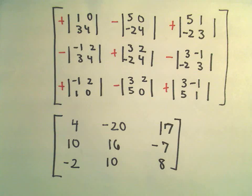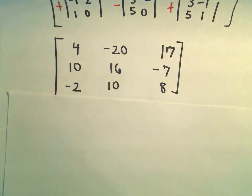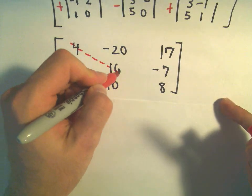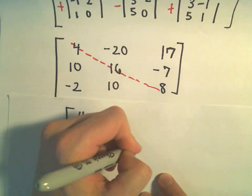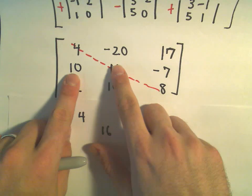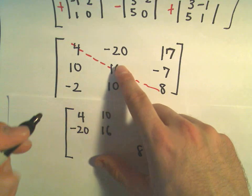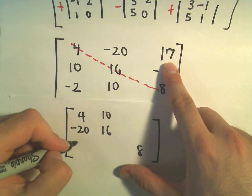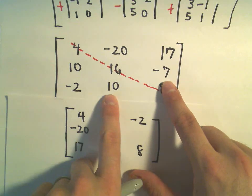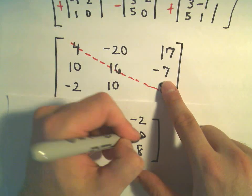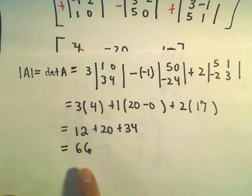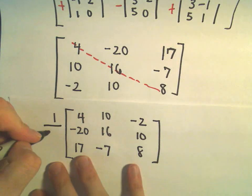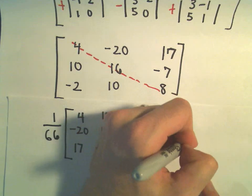The next thing we have to do is reflect the cofactor matrix about the diagonal to get the adjugate. I'll leave 4, 16, and 8 in place. My 10 and negative 20 switch spots, giving negative 20 and positive 10. My negative 2 and 17 switch spots. My 10 and negative 7 switch spots. Then we multiply by 1 over the determinant, which is 1 over 66, to get A inverse.